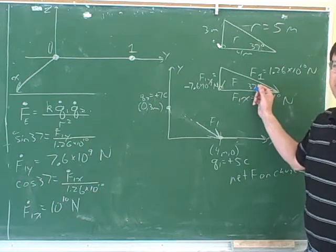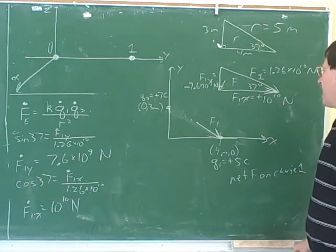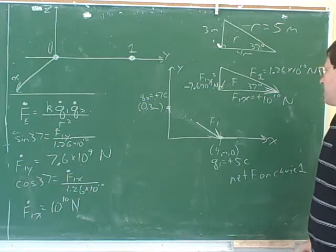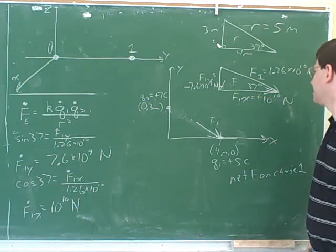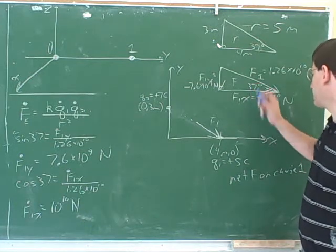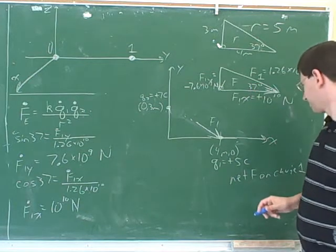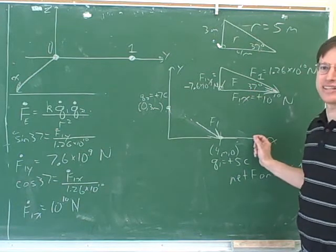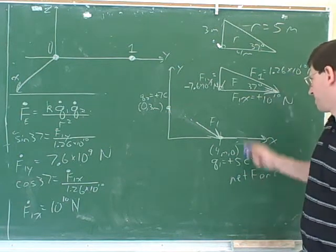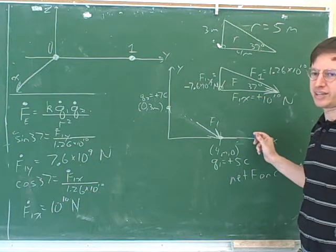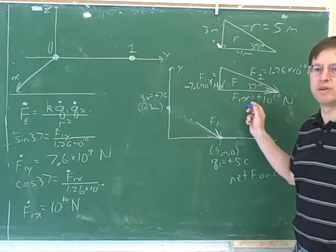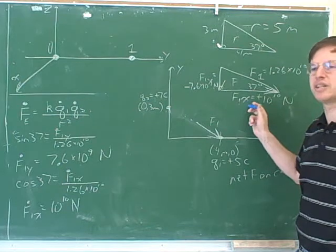We actually figured out the angle too. So we could also say that this is a force of 1.26 times 10 to the 10th, making an angle of 37 degrees with the x-axis. In some problems, all you would say is 1.26 times 10 to the 10th making an angle of 37 degrees with the x-axis. In other problems, it's more convenient to break this into components. But both approaches give you the same information.